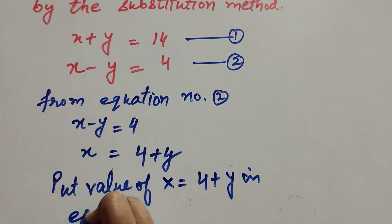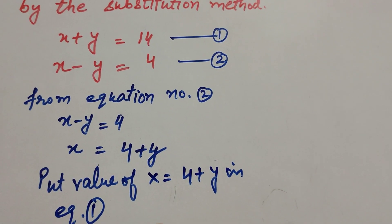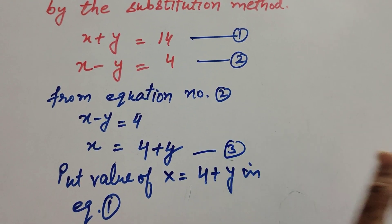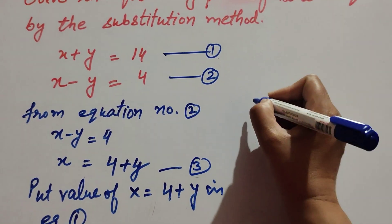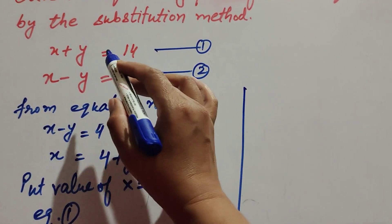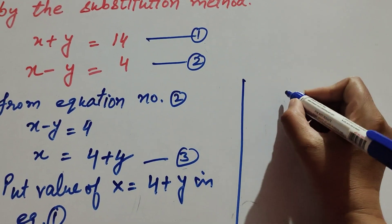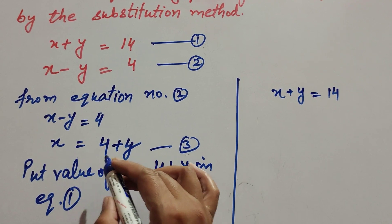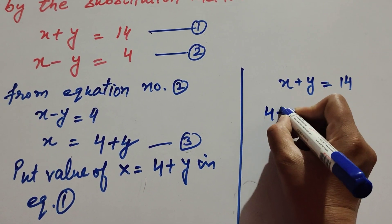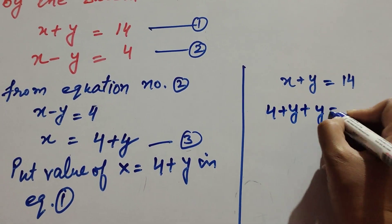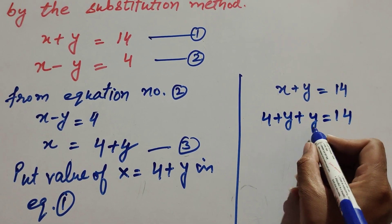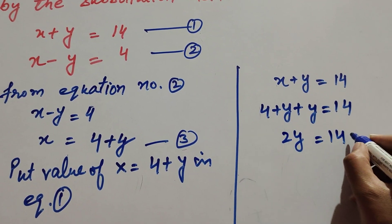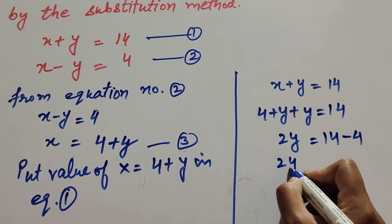We substitute x equal to 4 plus y into equation 1, which is x plus y equal to 14. This gives us 4 plus y plus y equal to 14, so 4 plus 2y equals 14. Transposing 4 to the right-hand side gives 2y equal to 14 minus 4, which is 10.